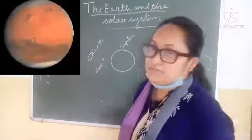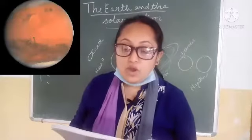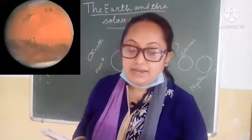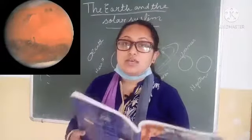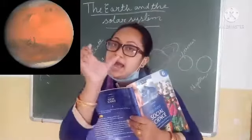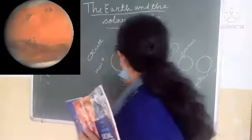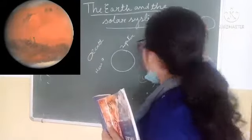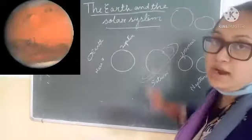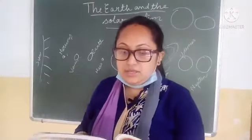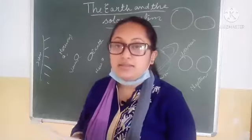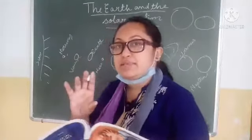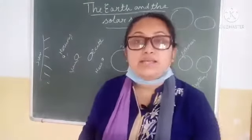Next is Mars. Mars is named after the Roman god of war. It is known as the red planet because Mars is red in color. Mars is about half the size of the Earth. It has almost the same period of rotation as the Earth, and it has two moons.